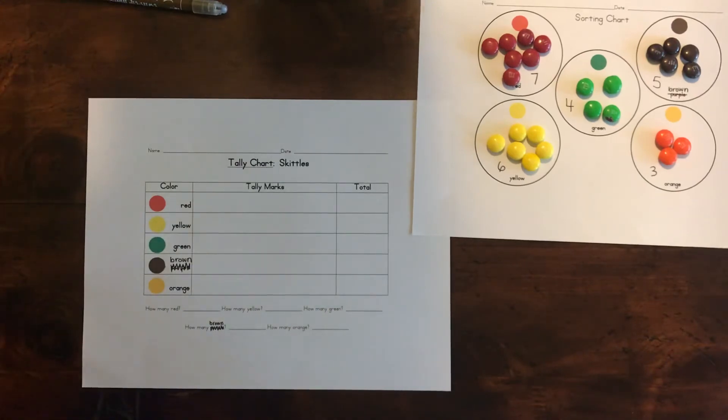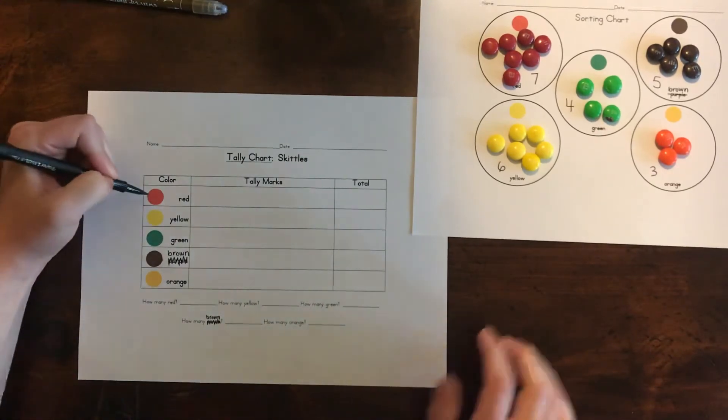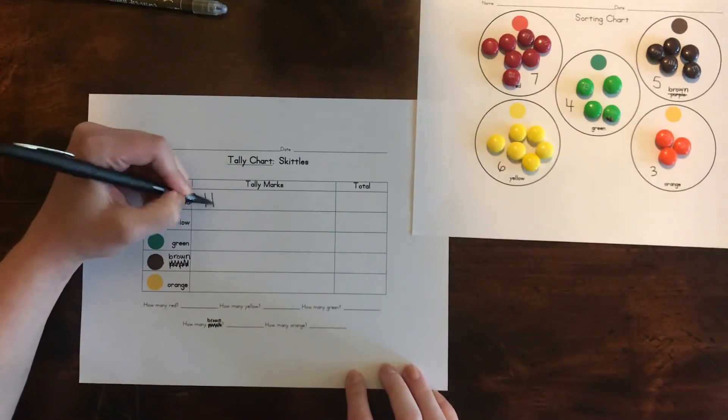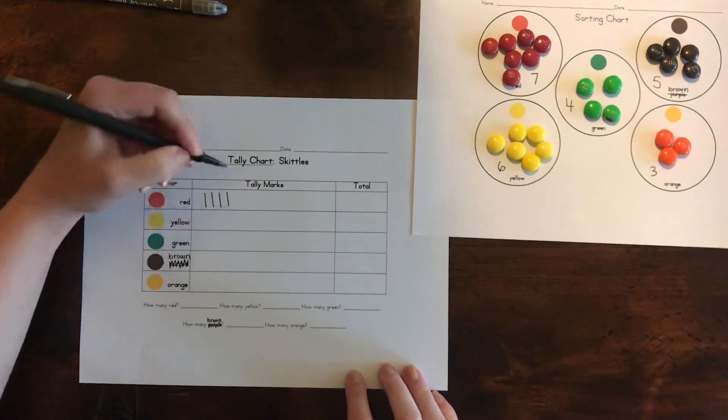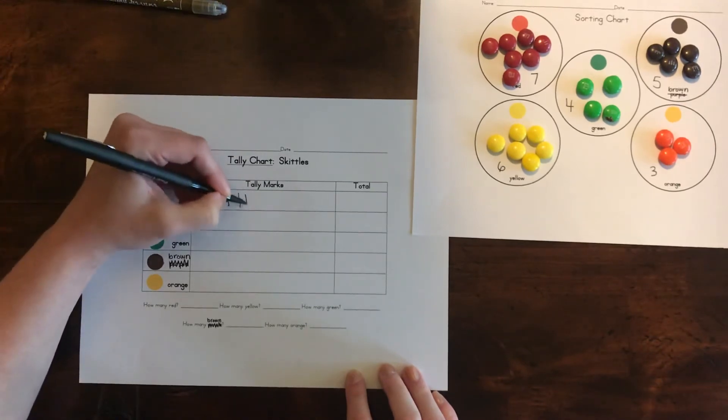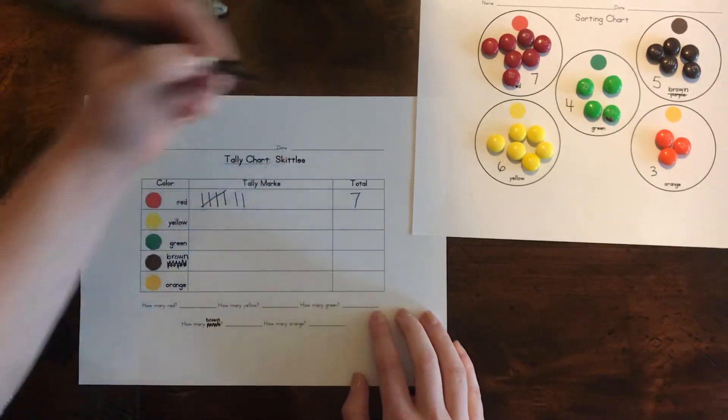We have a tally chart. So we're going to make tally marks to say how many we have of each color. So again, we're going to start with red. We had seven. So we're going to make tallies. One, two, three, four. Then you cross for five, six, seven. Then over here where it says total, you write the number seven.